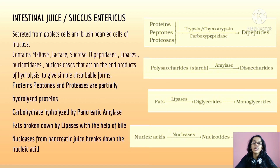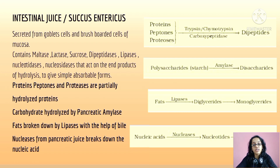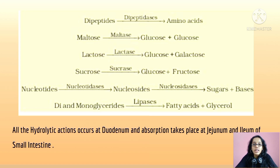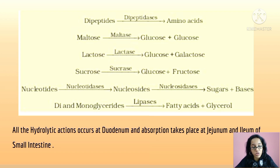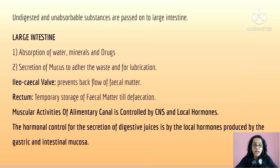The intestinal juice is otherwise called succus entericus. It is secreted from the goblet cells or brush border cells of the mucosa. It contains maltase, lactase, sucrase, dipeptidase, lipases, nucleotidases, and nucleosidases that act on the end products of hydrolysis to give simple absorbable forms. Maltose broken down by maltase gives two glucose molecules; lactose gives one glucose and one galactose; sucrose gives one glucose and one fructose. All hydrolytic actions occur in the duodenum, and absorption takes place in the jejunum and ileum.